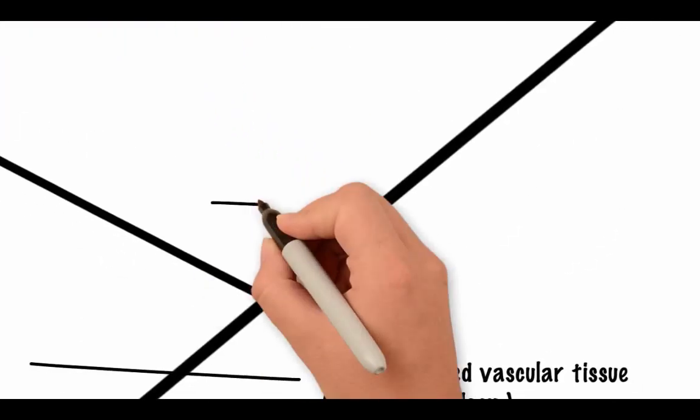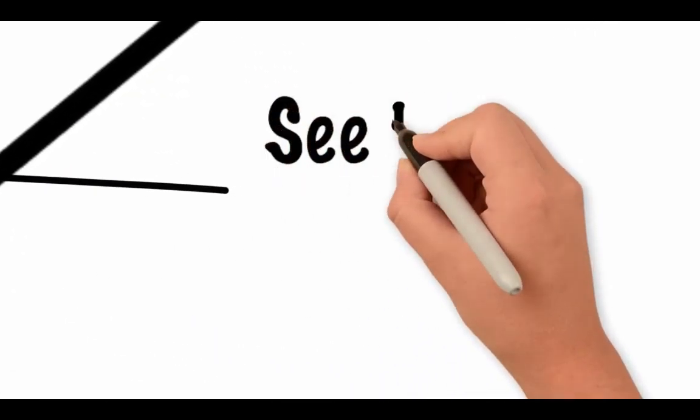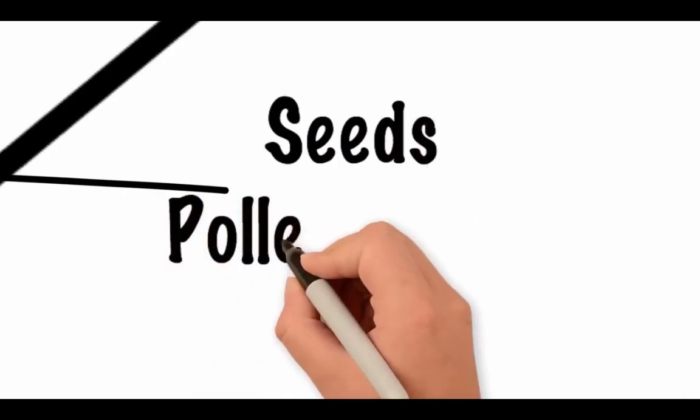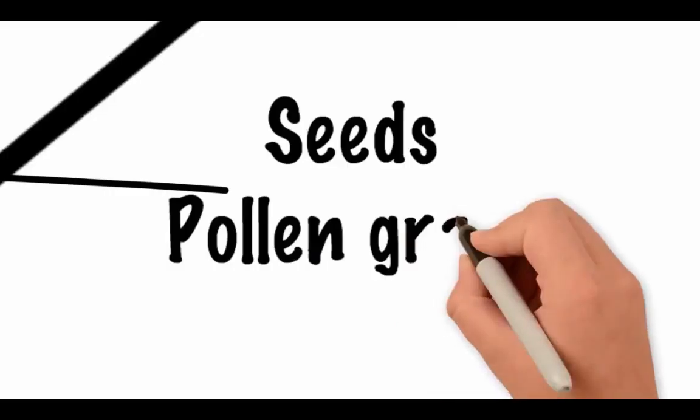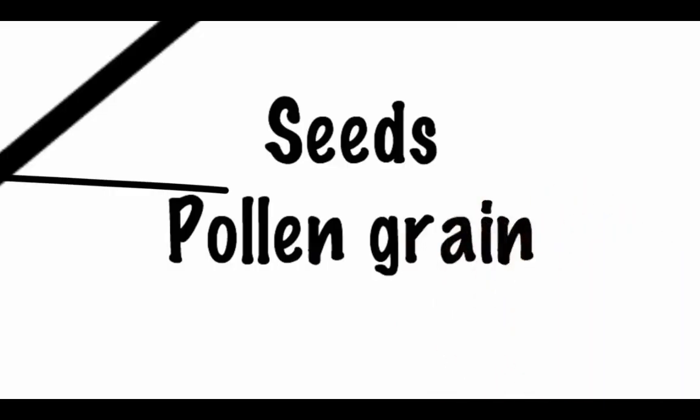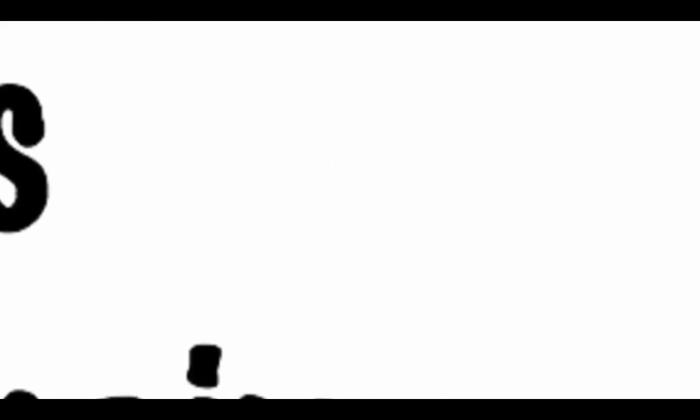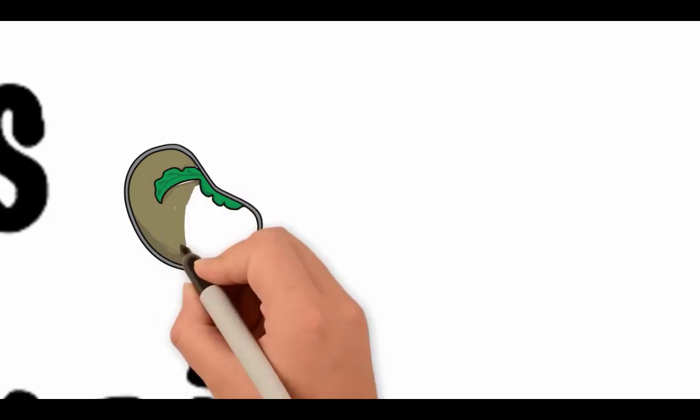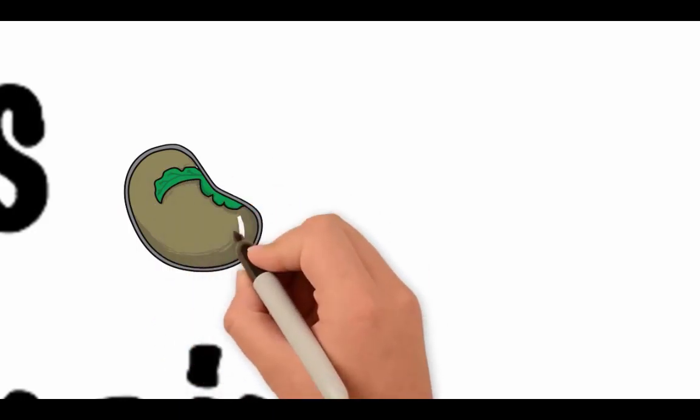The evolution of the pollen grain and the seed allowed for plants to exist in drier climates. This was first seen in the gymnosperms. Many gymnosperms have cones as their reproductive structures. The gametes are produced within these structures. The pollen grain is the male gametophyte. It has a protective coating to prevent the sperm from drying out. Pollen also allows the sperm to be transferred by wind to female structures instead of swimming in water.